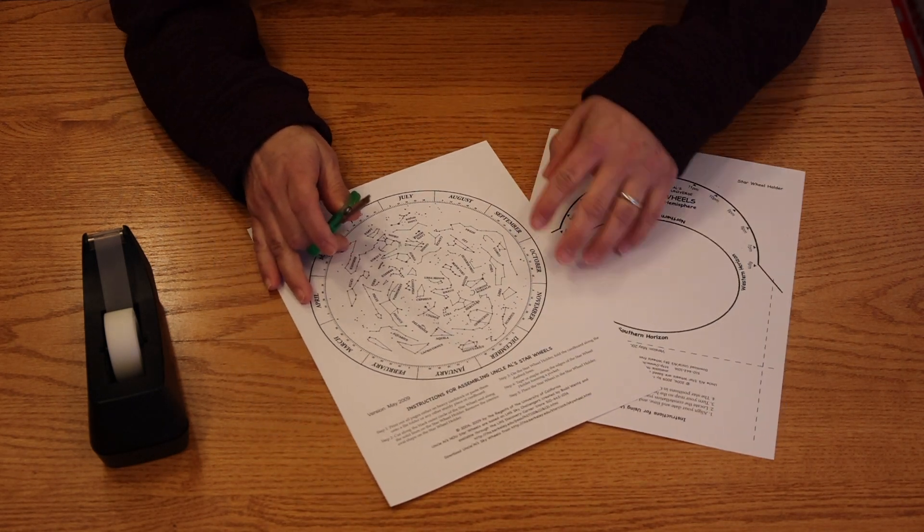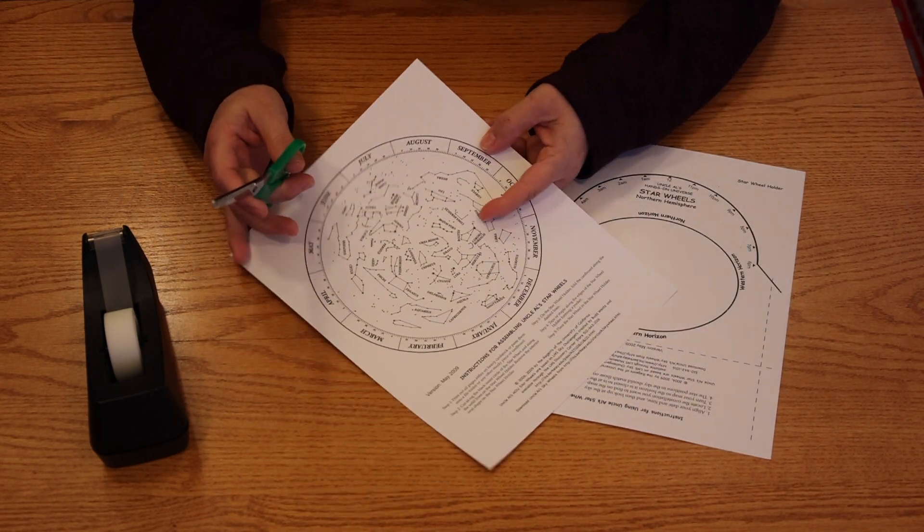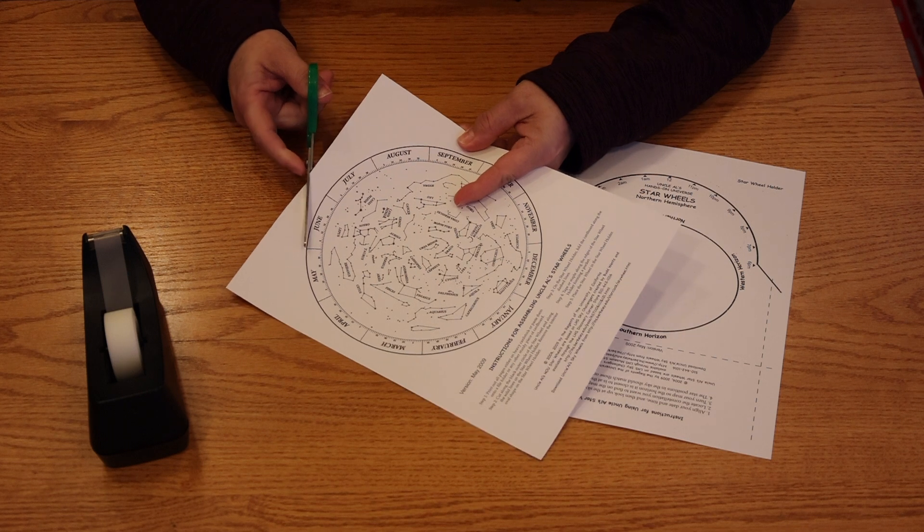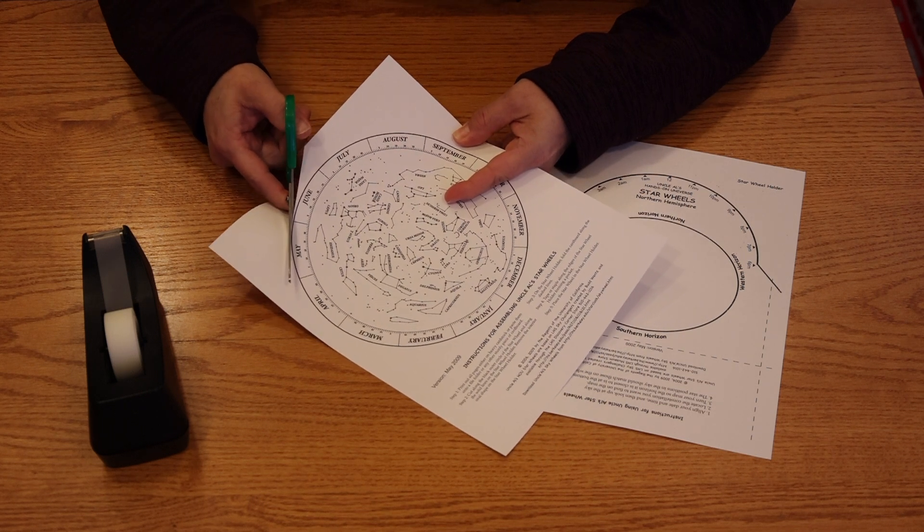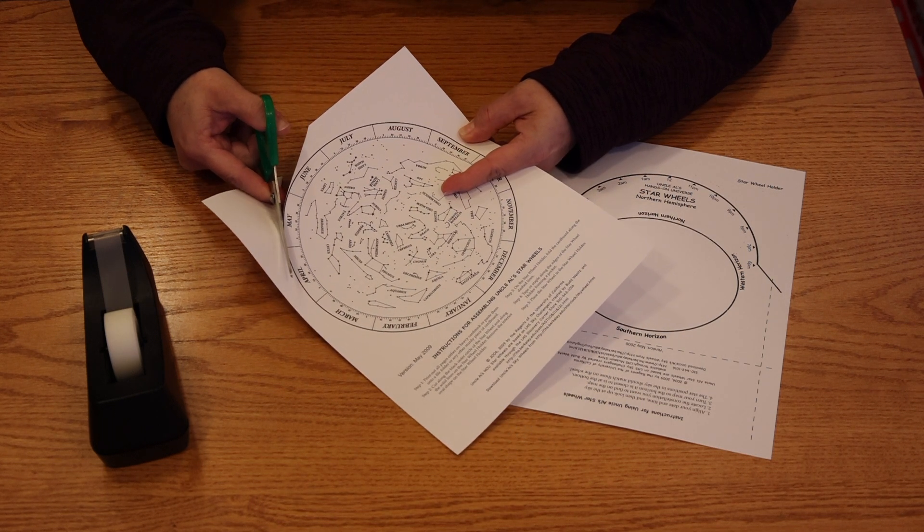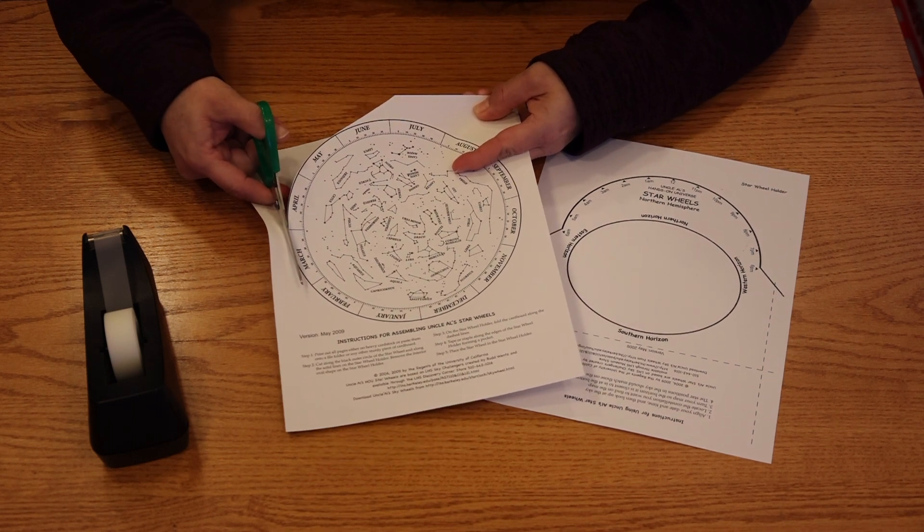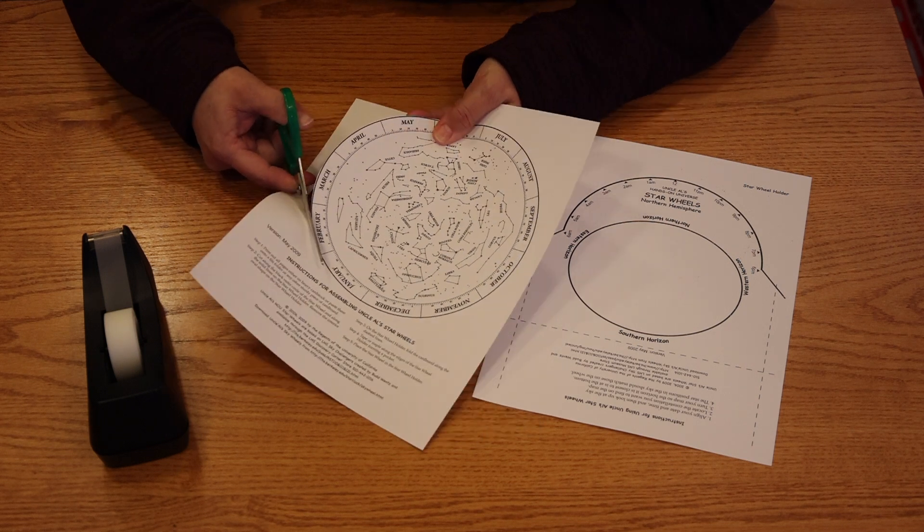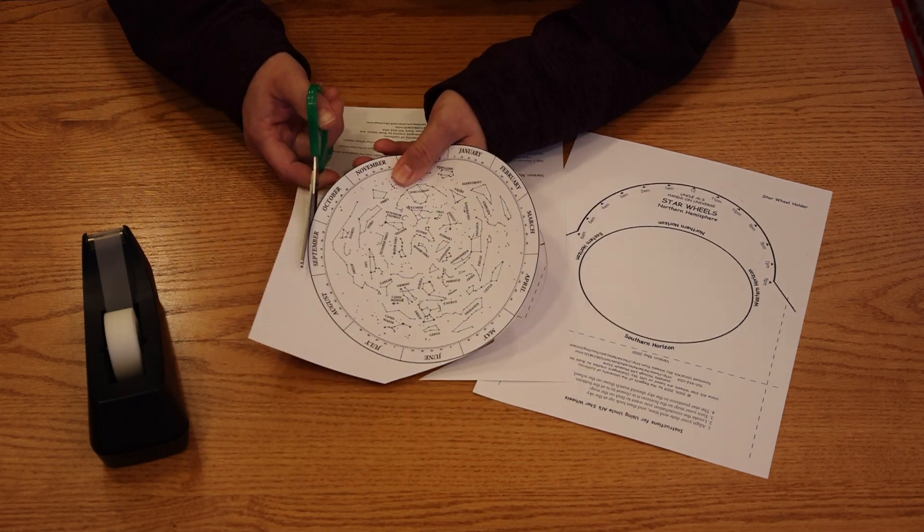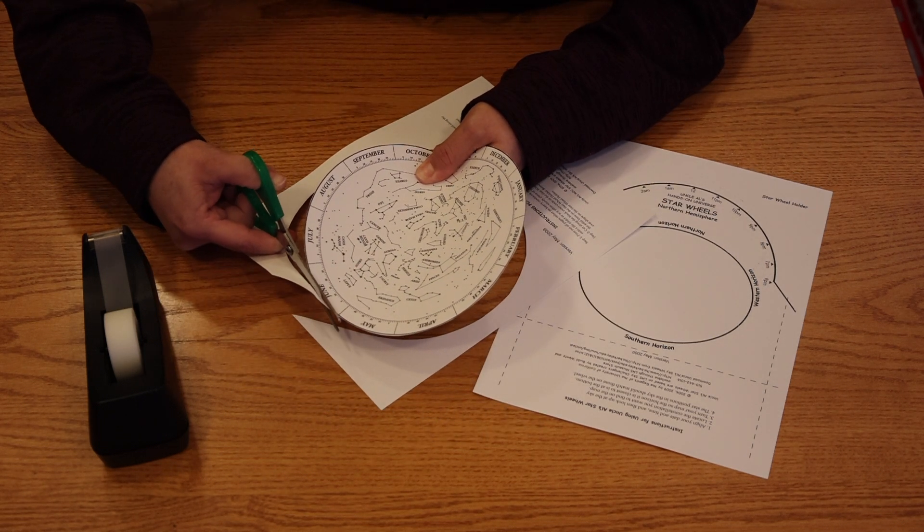Once you've printed out your pages, it's time to start cutting. Some of our younger viewers may want to get help from an older family member for this. Start with the star map. That's the page that has the pictures of the stars and constellations on it. You want to cut around the calendar part. Cut it neatly. It doesn't have to be perfect, but the better you cut it, the easier it will be to use.